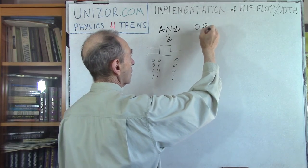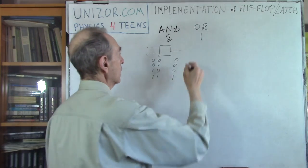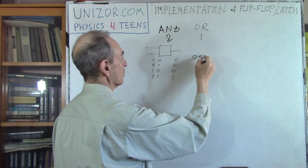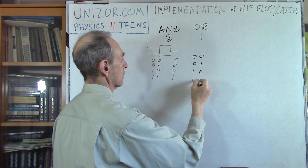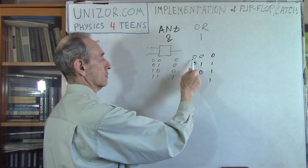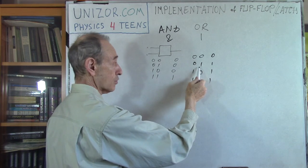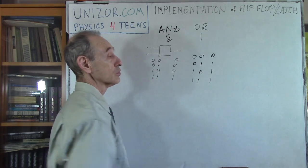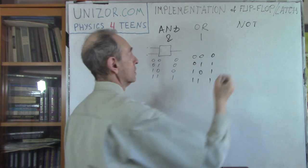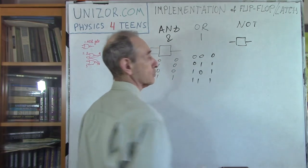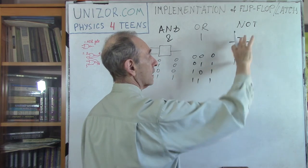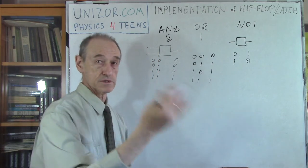There is also the OR operation — a vertical bar — and it's the same kind of binary operation: two inputs and one output. The same inputs produce slightly different output. Zero-zero gives zero, zero-one gives one, one-zero gives one, one-one gives one. So false OR false is false, false OR true is true, true OR false is true, and true OR true is true. Then there is a unary operation NOT, which has only one input and one output. NOT just reverses values — NOT false is true, NOT true is false.